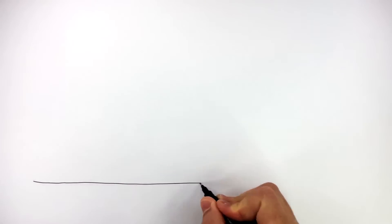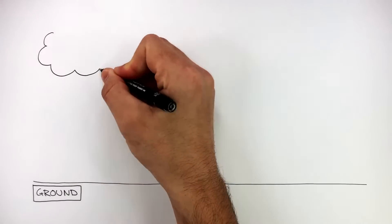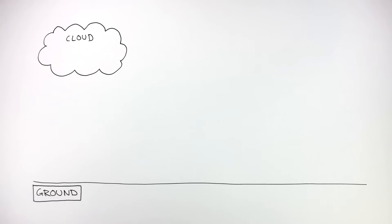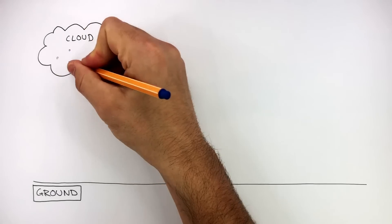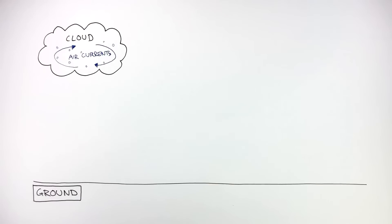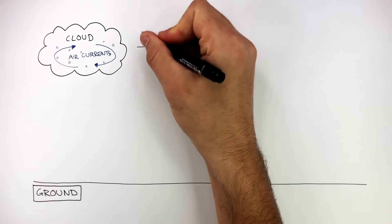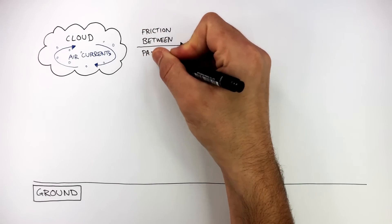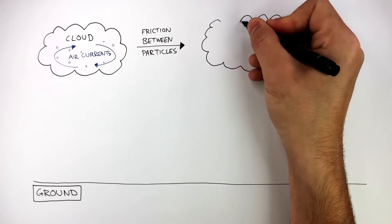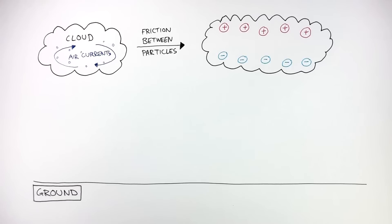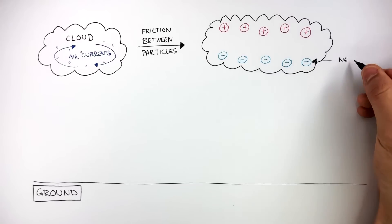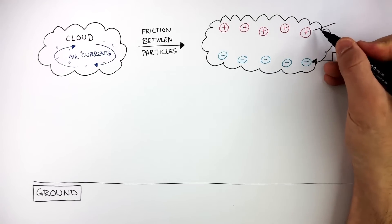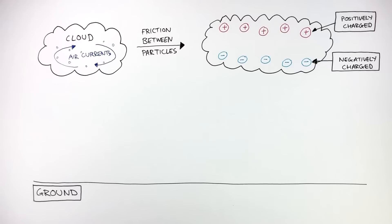This line represents the ground and here I'm drawing a cloud. We're now going to understand how lightning occurs. These clouds contain particles of water or ice, and air currents cause friction between the moving particles of water or ice. This causes static electricity to build up in the clouds. The blue dashes represent the negatively charged part of the clouds and the red crosses represent the positively charged areas of the clouds.